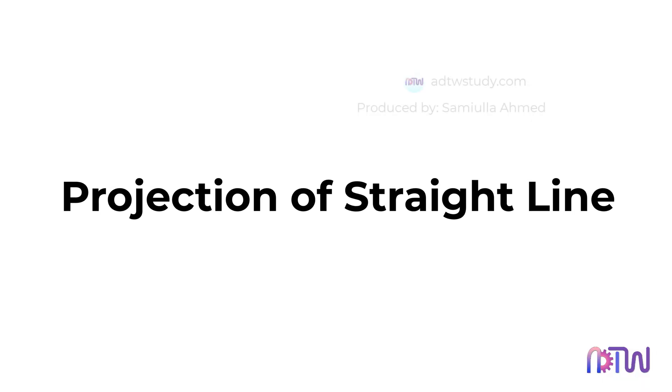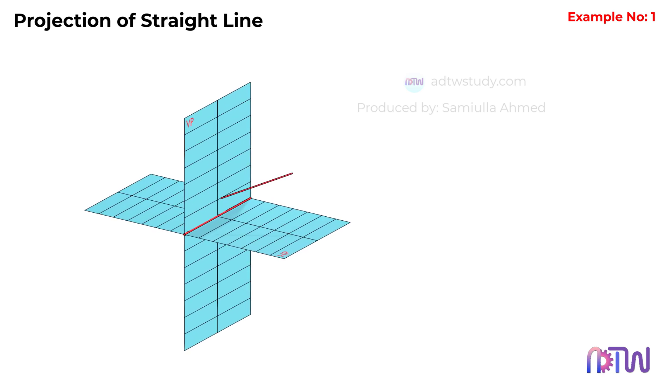Projection of Straight Line. Example number 1. Today, let's explore the projection of a straight line, focusing on a special case where the line is tilted to both vertical and horizontal planes. Remember our last video about different line positions in orthographic views? We're going to concentrate on that last position we mentioned.